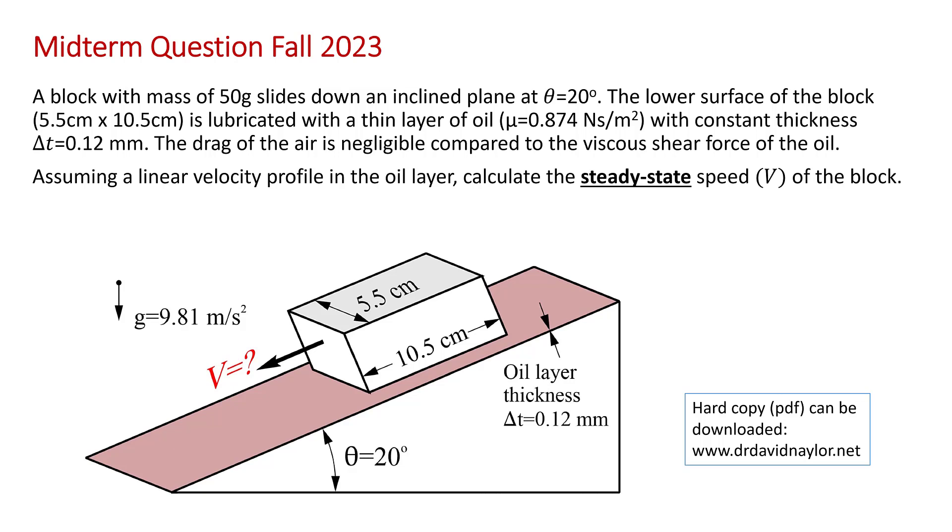So what we have is a classical setup that you often see in physics problems. You have a block sliding down an inclined plane, and the problem states, a block with a mass of 50 grams slides down an inclined plane at an angle of 20 degrees, here.